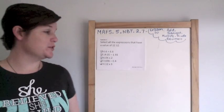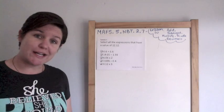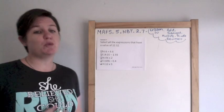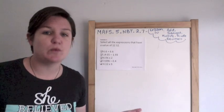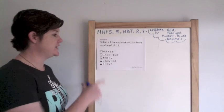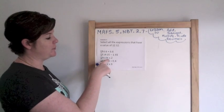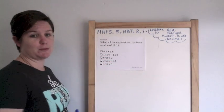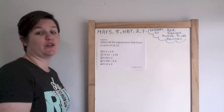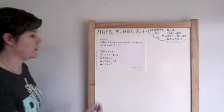Okay. Example 2 says select all. So we need multi-select here. Select all the expressions that have a value of 12.12, or as we should be saying it, 12 and 12 hundredths. So I've got some addition, some subtraction, some multiplication, some division, and then multiplication. I need to solve all these babies out to see if I get a value of 12 and 12 hundredths. So let's go.